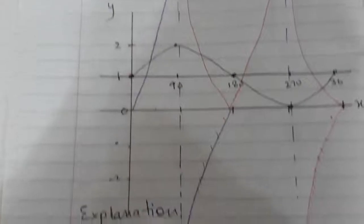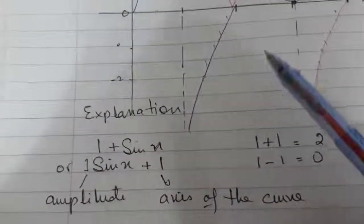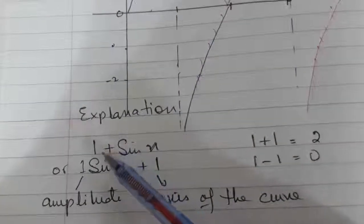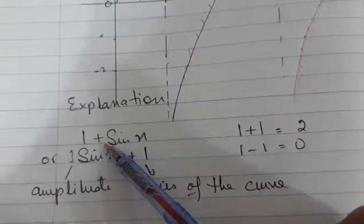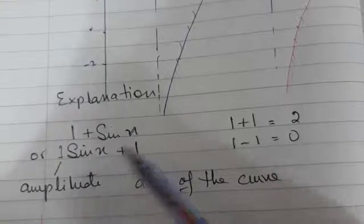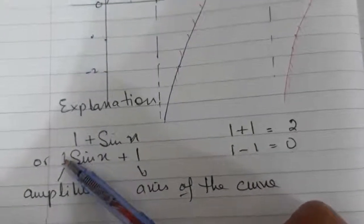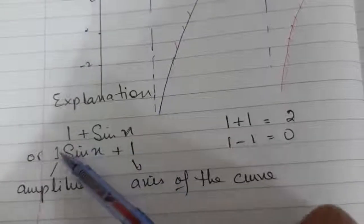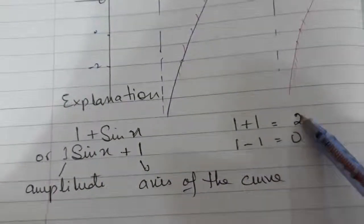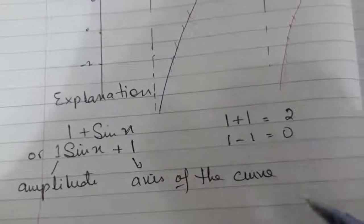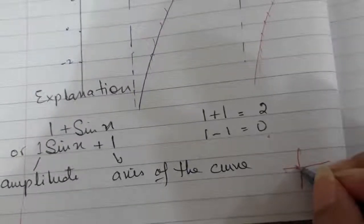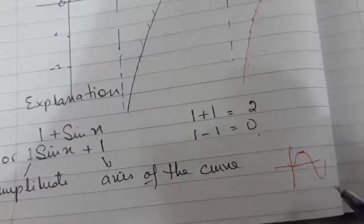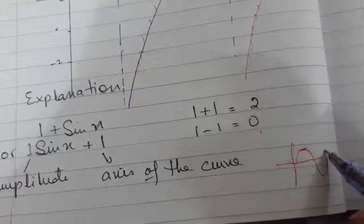If you see 1 plus sin x, I am explaining here how I have sketched it. 1 plus sin x can be written as 1·sin x plus 1 — when there is no coefficient written it means it is 1. So 1 is my axis of the curve and 1 is my amplitude. To find maximum and minimum value, we add and subtract these two values, giving maximum = 2 and minimum = 0. In the sin graph the curve has a characteristic shape, so maximum will happen at y = 2 and minimum will happen at y = 0, and the axis line will be at y = 1.